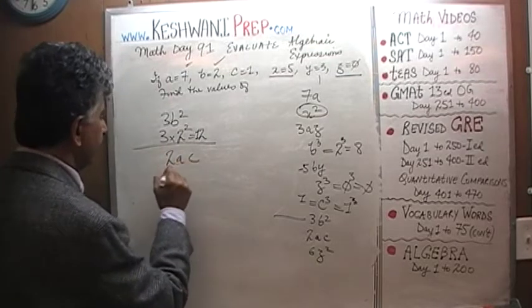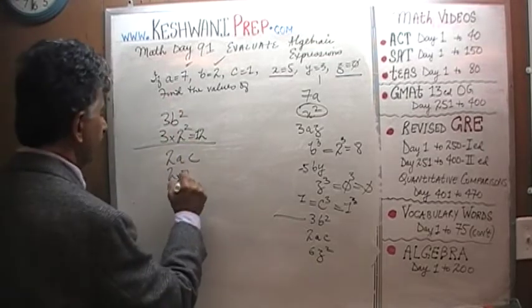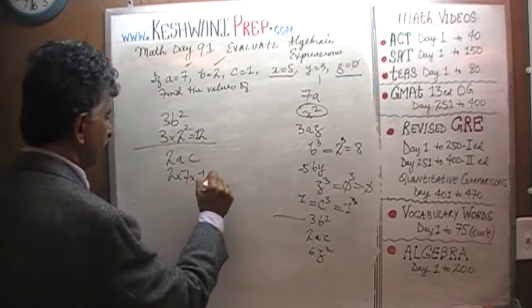Then we have 2AC, 2AC, 2 times A, which is 7, times C, which is 1, so it's just 14.